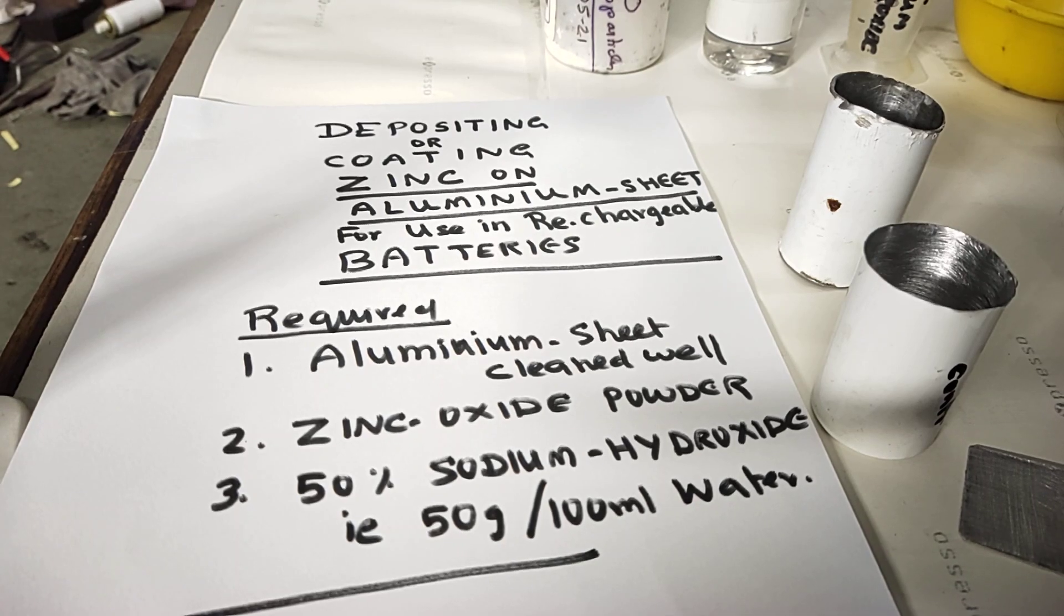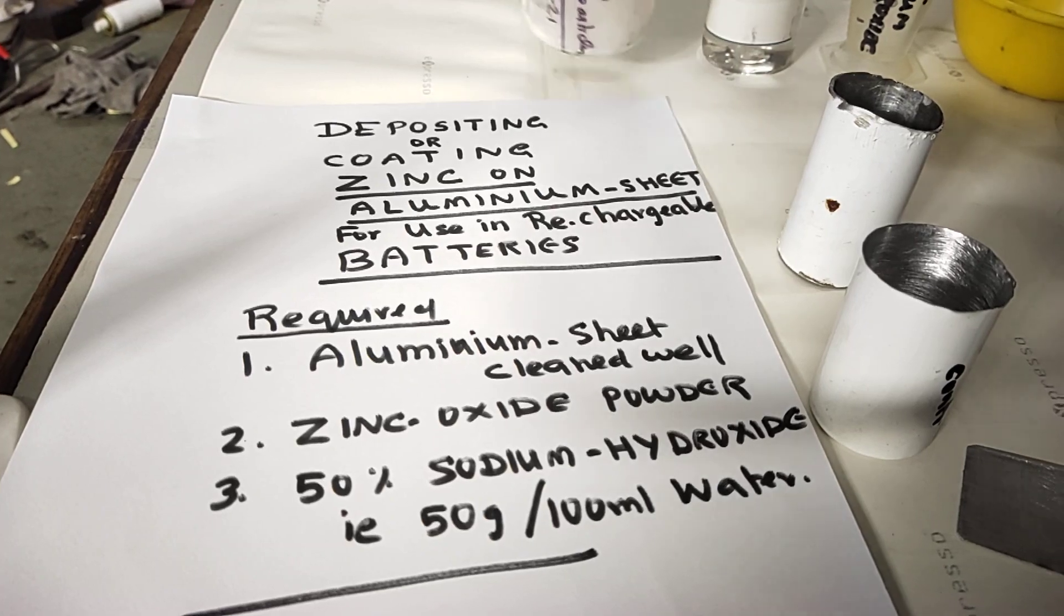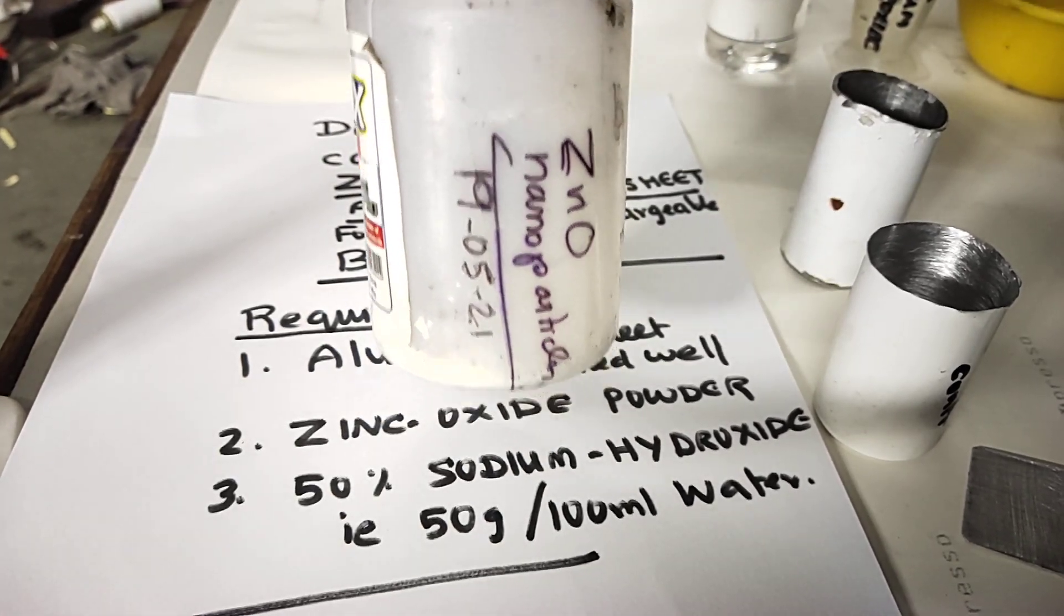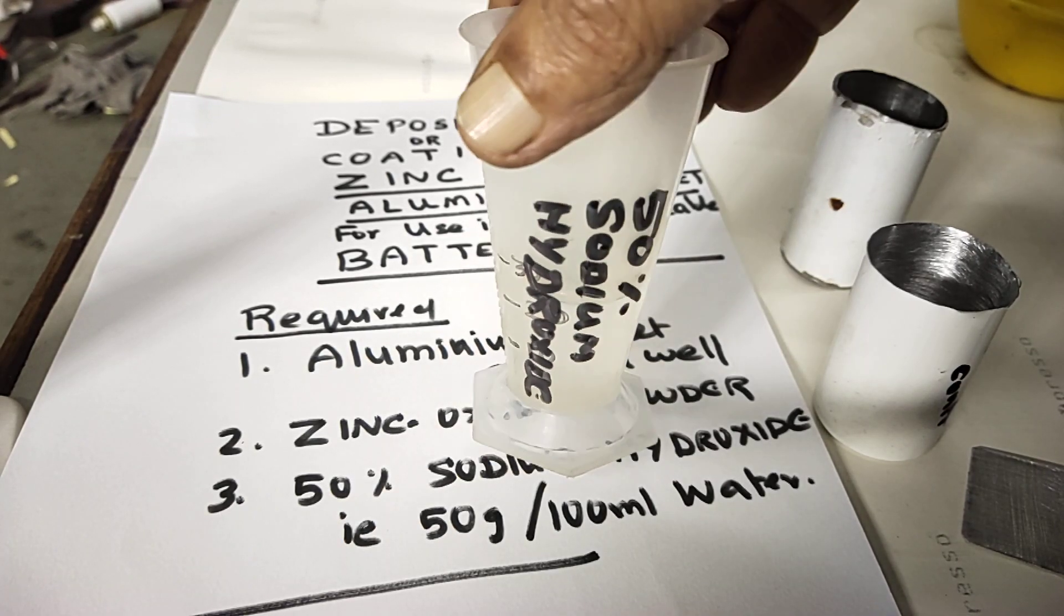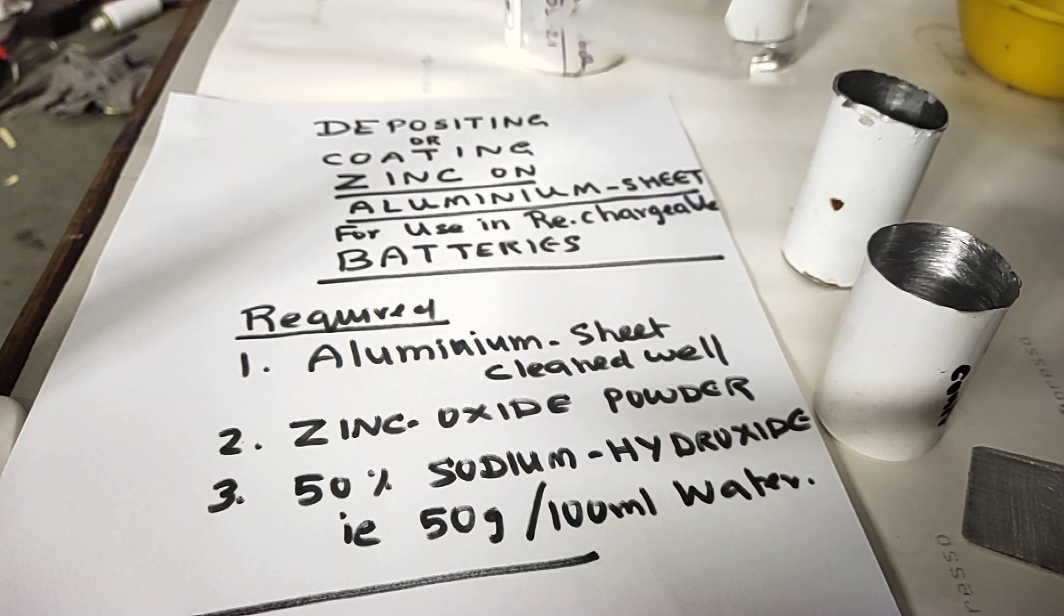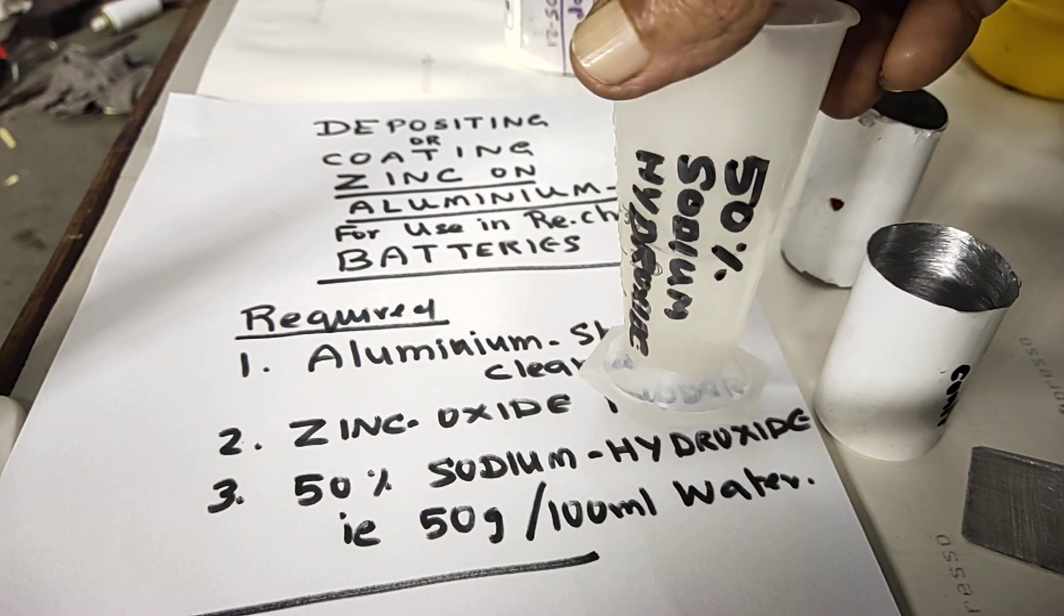What we require: aluminum, zinc oxide powder (I have zinc oxide nanoparticles), and 50 percent sodium hydroxide. Let me tell you how to prepare this. We have to take 50 grams of sodium hydroxide dissolved in 100 ml of distilled water or deionized water. This takes caution - we have to slowly dissolve it, step by step increasing the water content, because it will give more heat. Then keep aside to cool it. That is the solution called 50 percent sodium hydroxide.